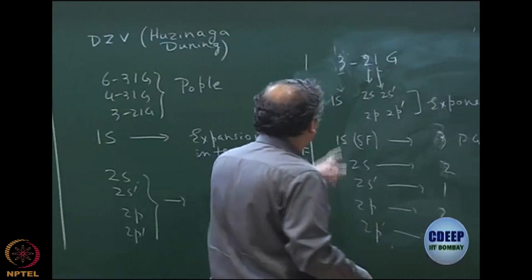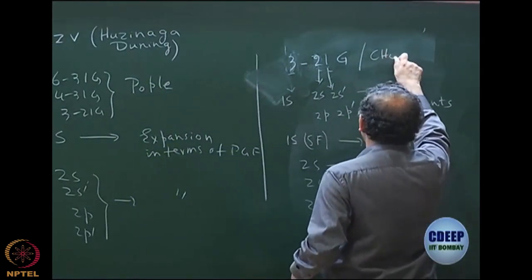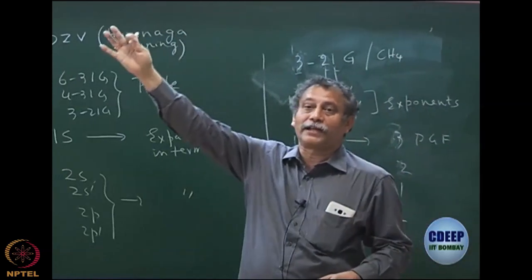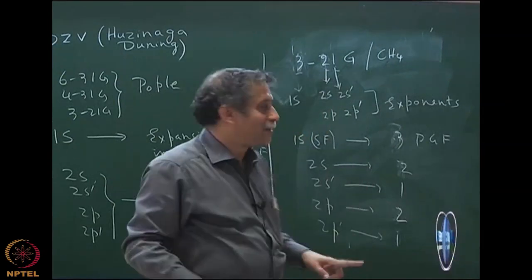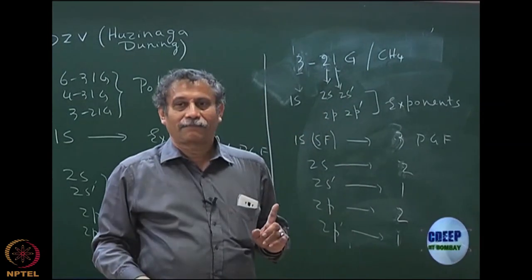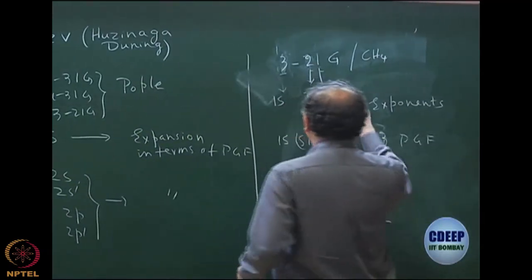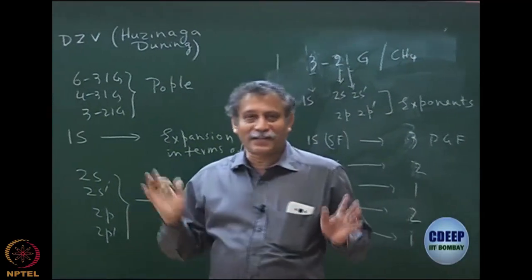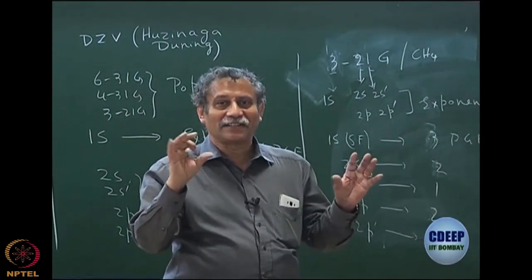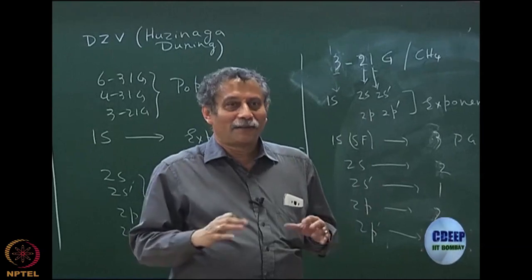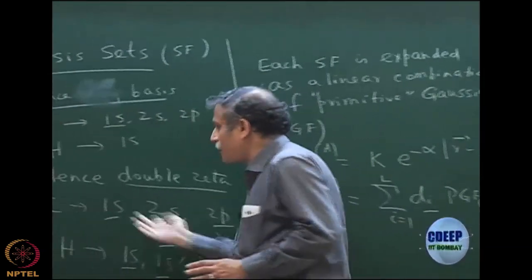If you do a 3-21G calculation for methane, the total number of MOs is still 17 — same for 4-31G and 6-31G. Many people get confused because the numbers 3, 4, 6 are increasing, but you are still describing the same number of atomic orbitals. What is changing is only the quality of the atomic orbitals in terms of primitive Gaussians.